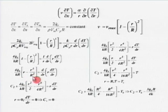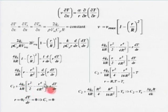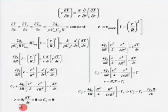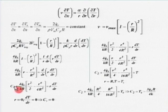Integrating: C₁ + (4Q_dot_s/k)(1/R)[r²/2 − r⁴/(4R²)] = r(dT/dr). Applying the boundary condition at r = 0 where dT/dr = 0 (symmetric temperature profile), substituting gives C₁ = 0.